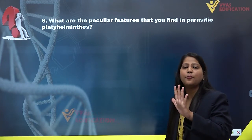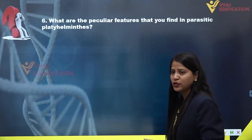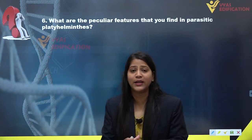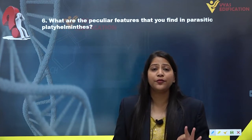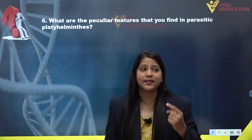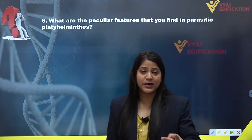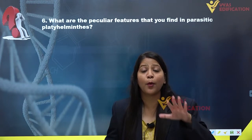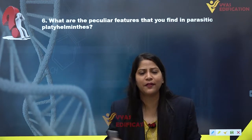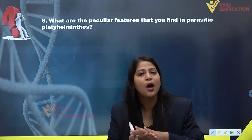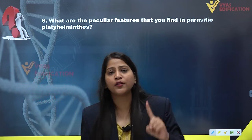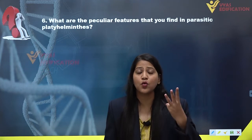The question is asking about the peculiar features of platyhelminthes parasites. The peculiar features of Fasciola and Taenia are: first, they have a dorso-ventrally flattened body. The body is flat from the dorsal side as well as from the ventral side.